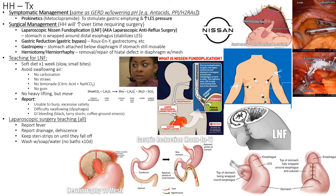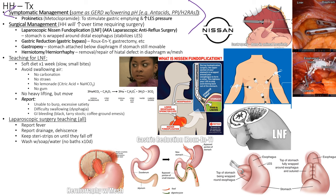Treatment for hiatal hernia includes symptom management through lifestyle changes: weight loss to reduce abdominal pressure, high-fiber diet to address constipation, and prokinetics such as metoclopramide to stimulate gastric emptying. Metoclopramide also tightens the LES, improving GERD symptoms. An important side effect of metoclopramide is QTc prolongation, which can lead to torsades de pointes — monitor the EKG.